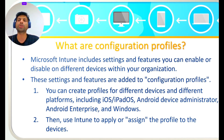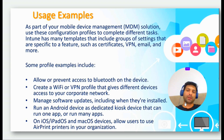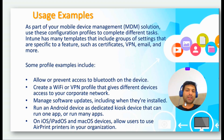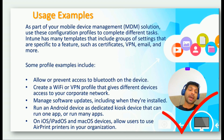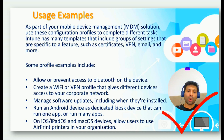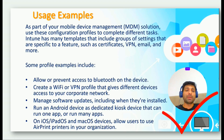As part of your mobile device management (MDM) solution, use these Configuration Profiles to complete different tasks. Intune has many templates that include groups of settings specific to a feature such as Certificate, VPN, Email, and more. Some profile examples include: allow or prevent access to Bluetooth on devices; create a Wi-Fi or VPN profile that gives different devices access to your corporate network; manage software updates, including when they are installed; run Android devices as a dedicated kiosk device that can run one or many apps; and on iOS, iPadOS, and macOS devices, allow users to use AirPrint printers in your organization.